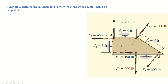We will now solve an example in which three couple forces are applied on an element, and we need to determine the resultant moment of the three couples acting on the plate. For the first couple, F1, both forces are equal with a magnitude of 200 pounds, they are opposite in direction, and separated by a perpendicular distance.